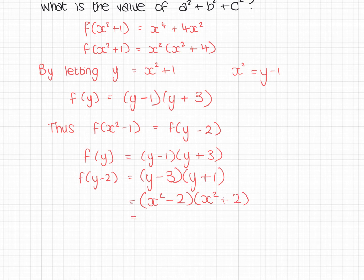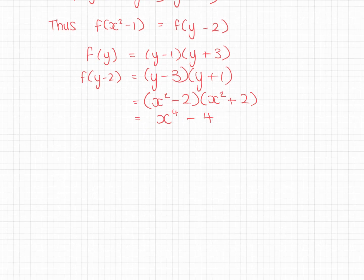And if I multiply out those two brackets, I'm going to get x to the 4 minus 4. And I know that this must be what they said f of x minus 1 is. We've said these two things are the same. f of x squared minus 1 is the same as f of y minus 2. So these two things are equal. So I'm just going to compare this to the one we had, which was the ax4 plus 4bx squared plus c.